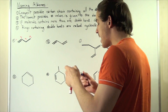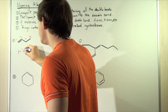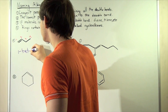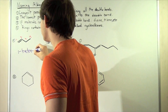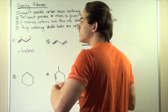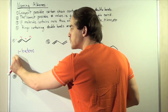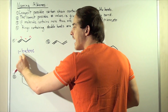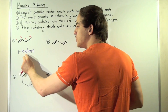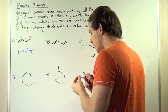We name our alkene simply 1-butene. The '1' means our double bond is found on the first position, and 'butene' means we have a four-carbon backbone.